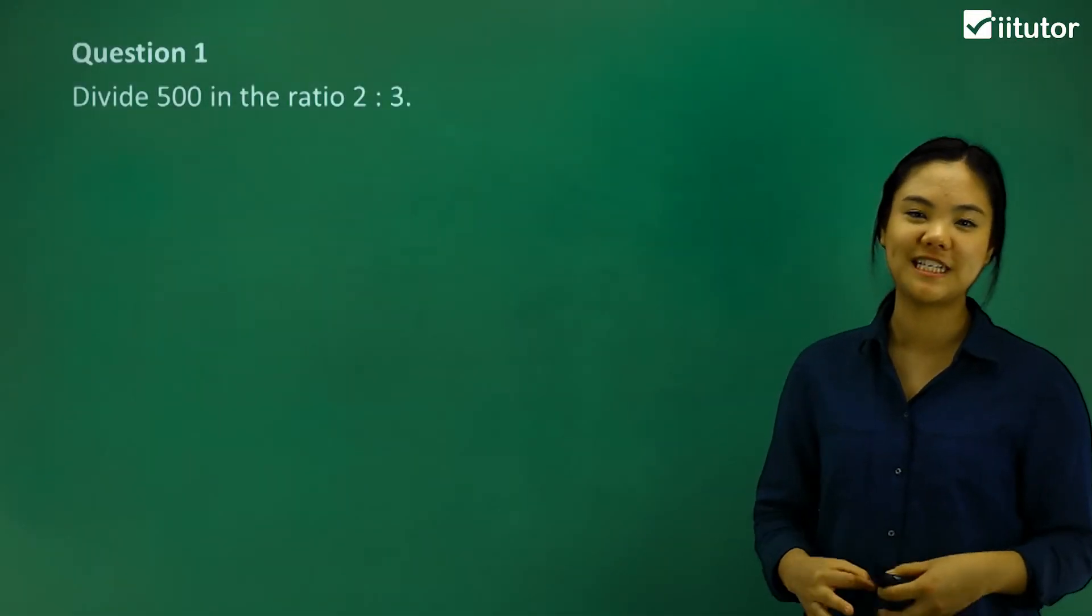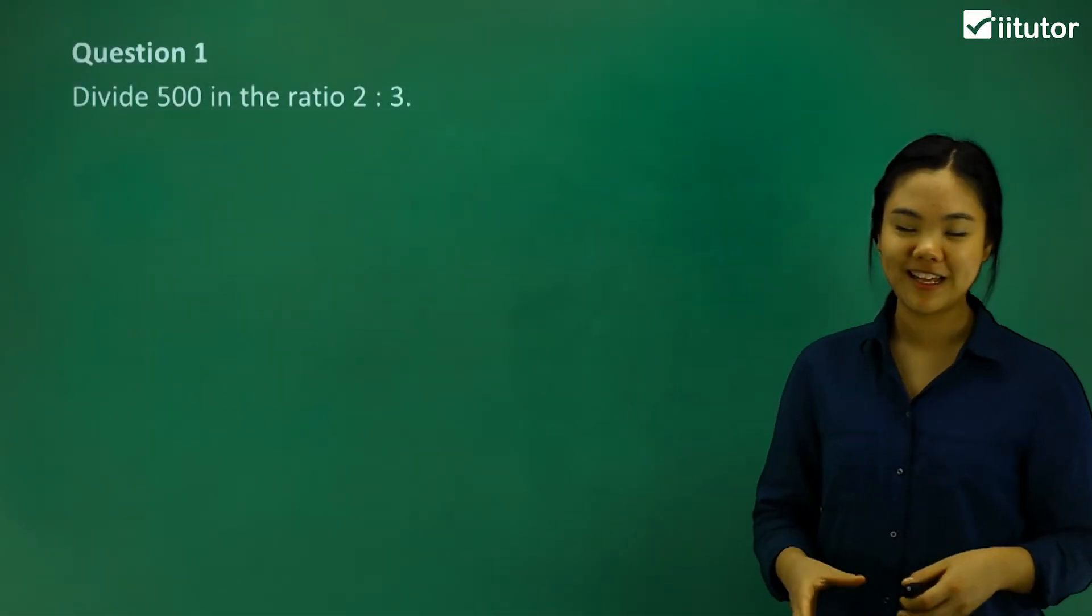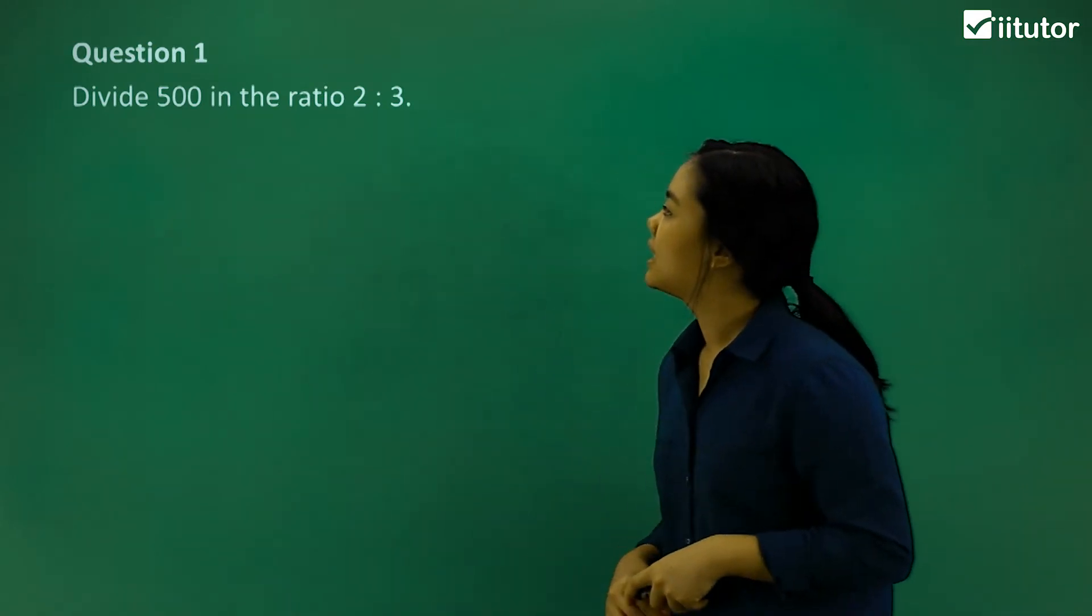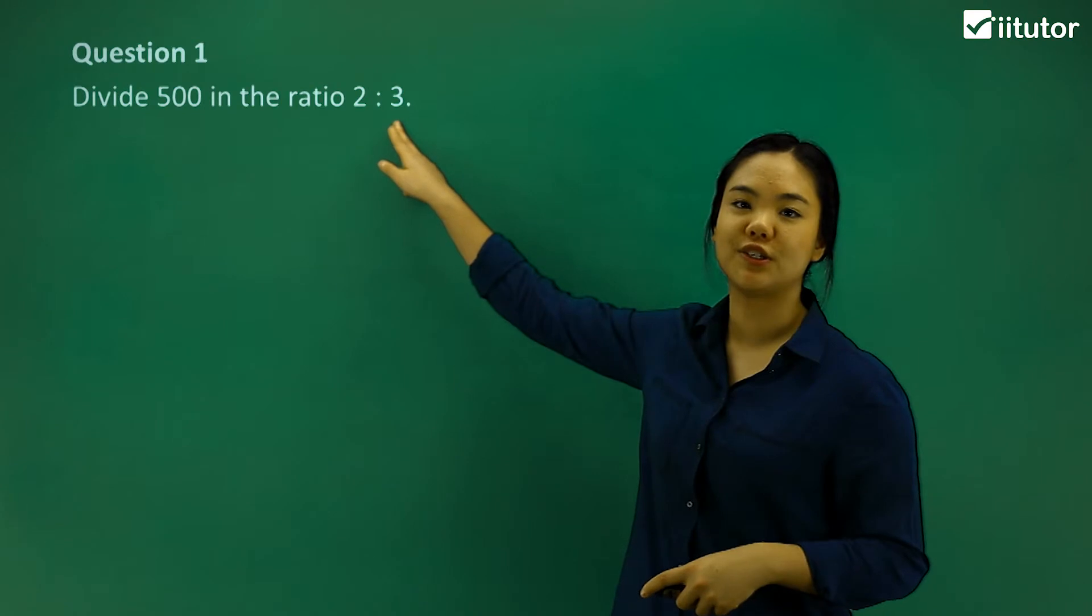Okay, so dividing a quantity by a given ratio. Let's do question one. It says divide 500 in the ratio of 2 to 3.